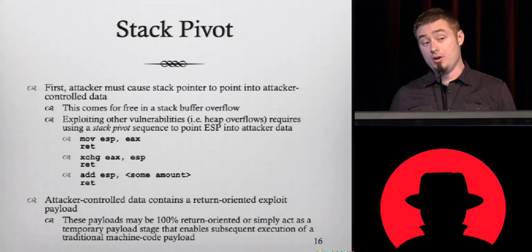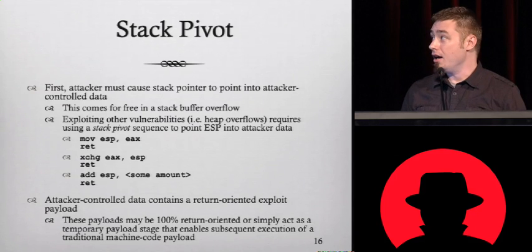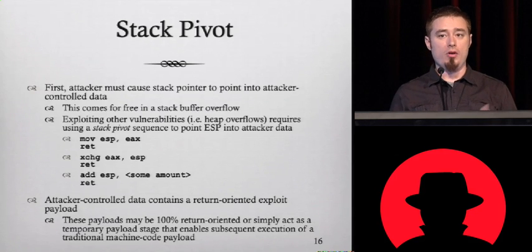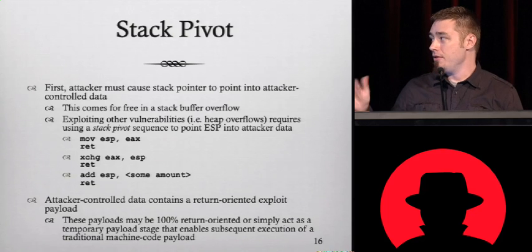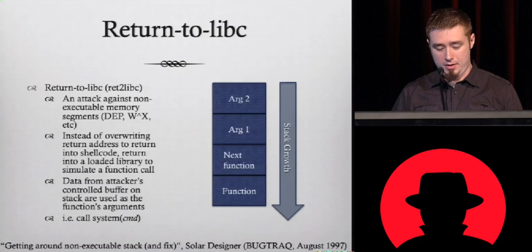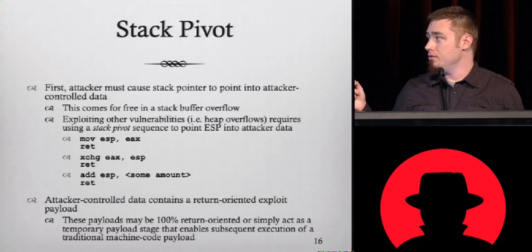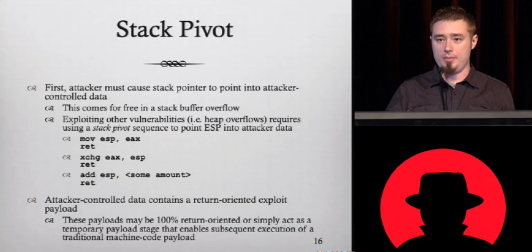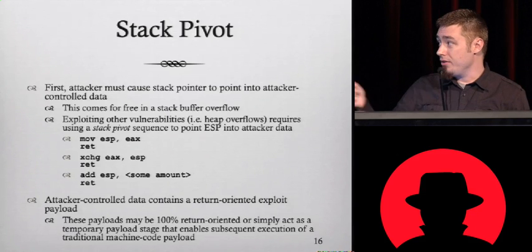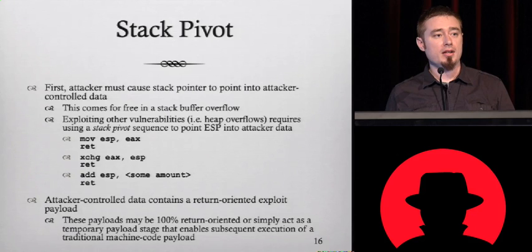The first step is called the stack pivot — some people call it the stack flip. What you're doing is getting ESP to point to data that you control. In a vanilla stack buffer overflow from days of yore, you got that for free; now you have to pay for it. You need to find a simple instruction sequence that will point ESP into data you control. You can move a register you control to the stack pointer and then return, though you probably won't find this very often. You can find an instruction sequence that adjusts the stack pointer by a constant amount. My favorite is XCHG EAX, ESP followed by RET — it's a pretty short encoding.